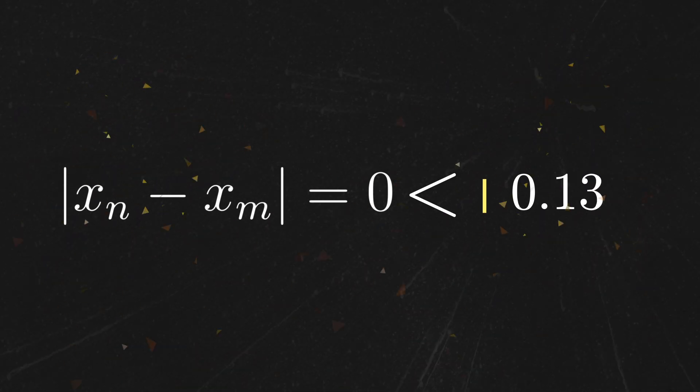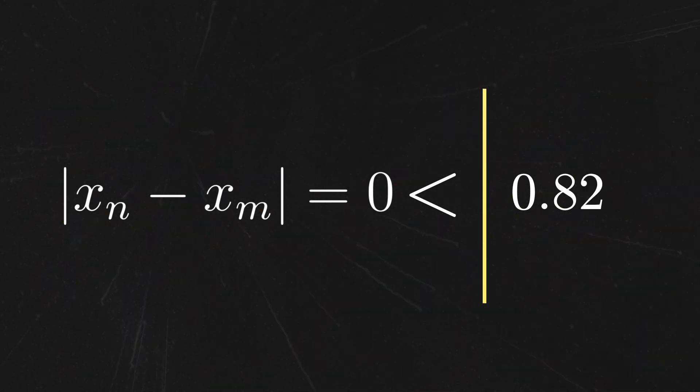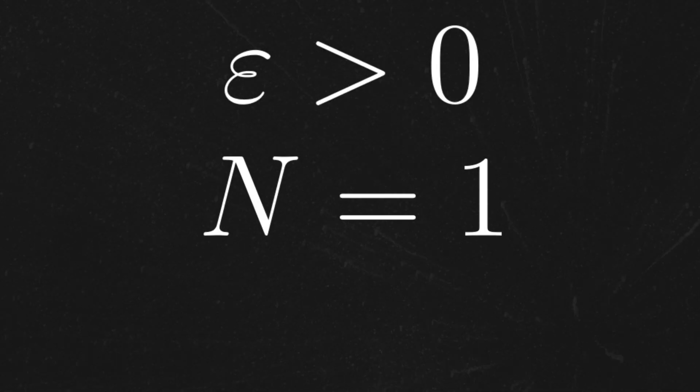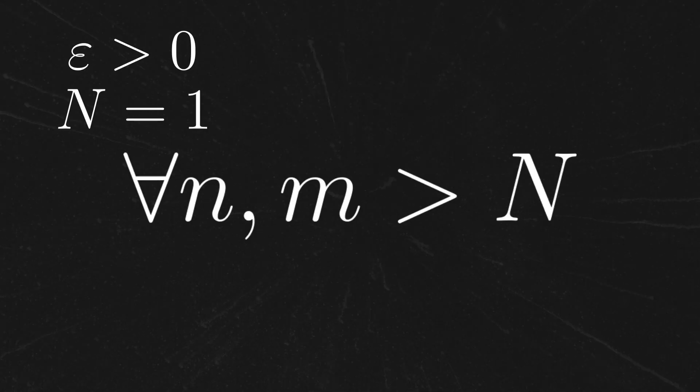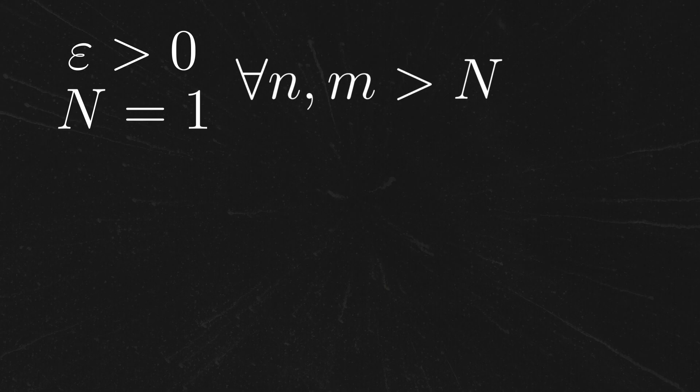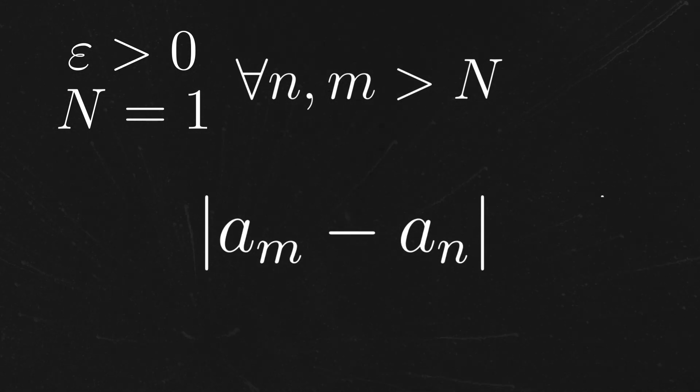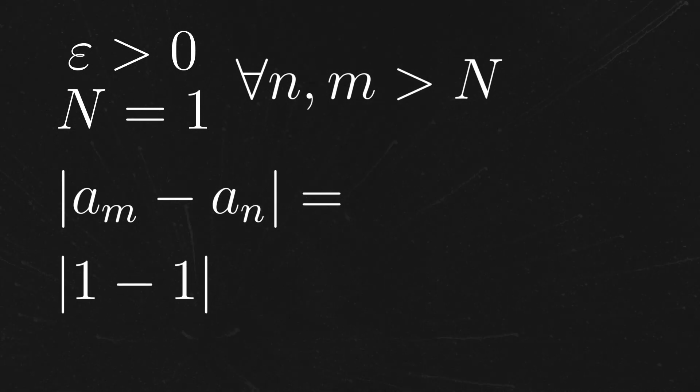To be a little more formal in a proof, we might say something like this. Let epsilon be a positive rational number, and choose N to be the natural number one. Then, for every pair of natural numbers, m and n bigger than big N, we can see that the distance from a_n to a_m is equal to the absolute value of one minus one,